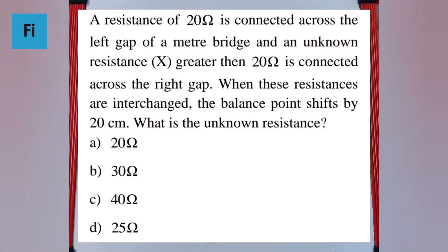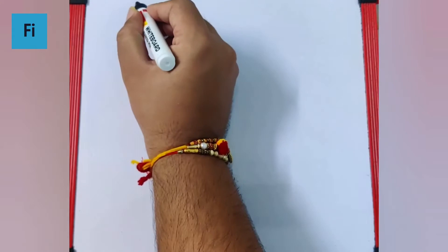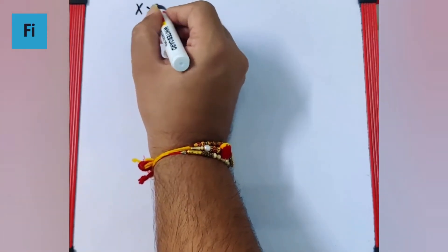The question says a resistance of 20 ohm is connected across the left gap of a meter bridge and an unknown resistance X greater than 20 ohm is connected across the right gap. When these resistances are interchanged, the balance point shifts by 20 centimeter. What is the unknown resistance?